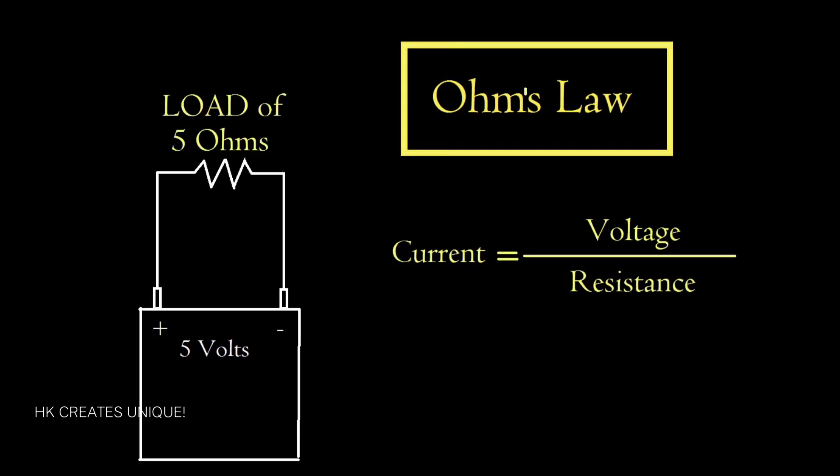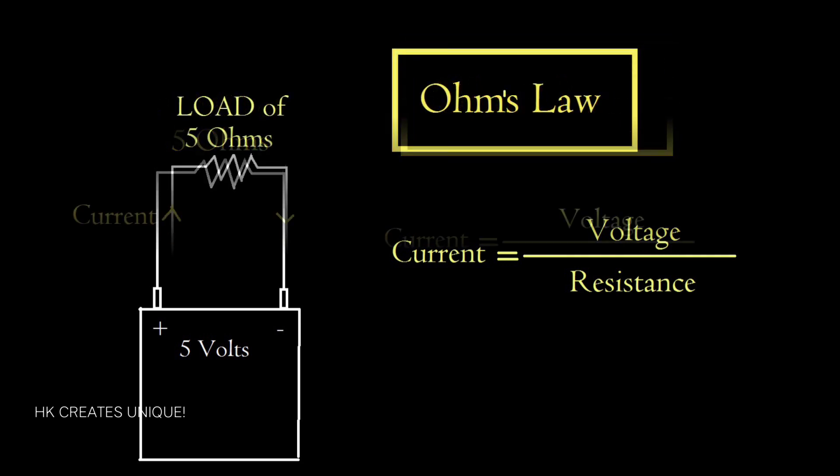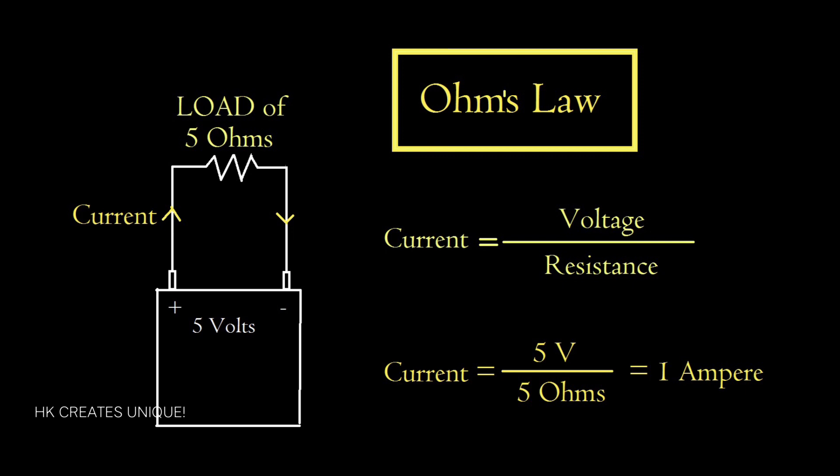Therefore, in this 5V battery, if you connect a 5 Ohm resistance load, current flow in the circuit will be 5V divided by 5 Ohms, which equals 1A.